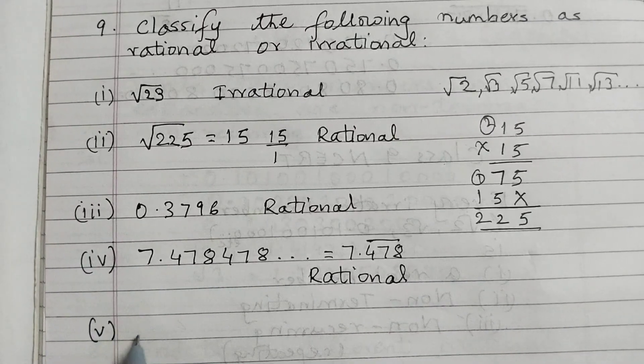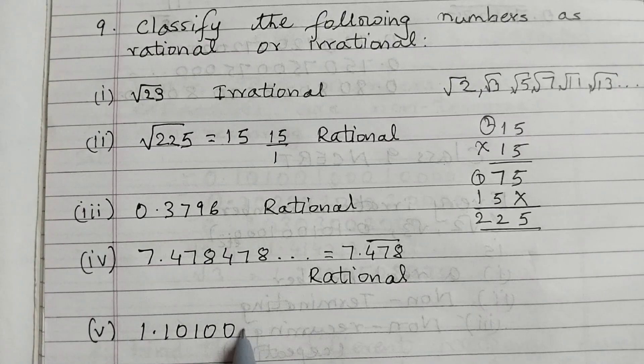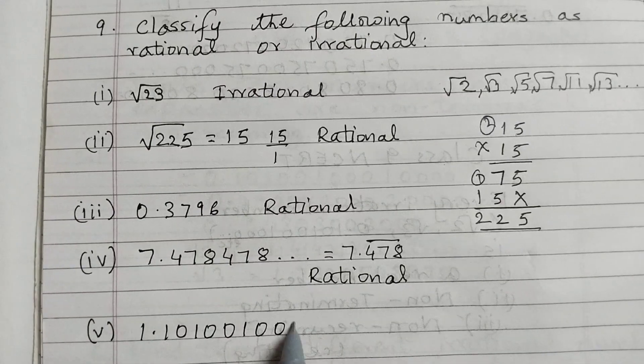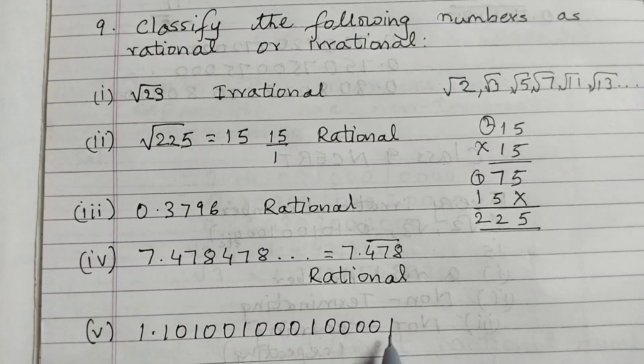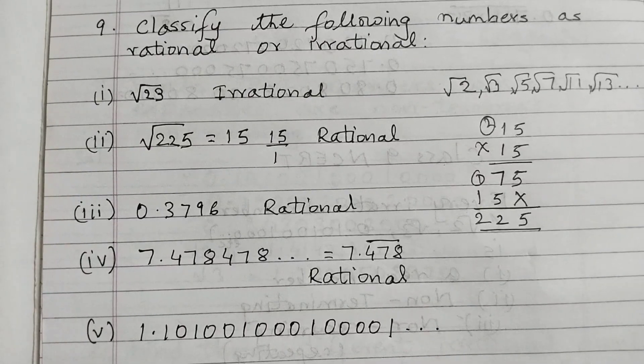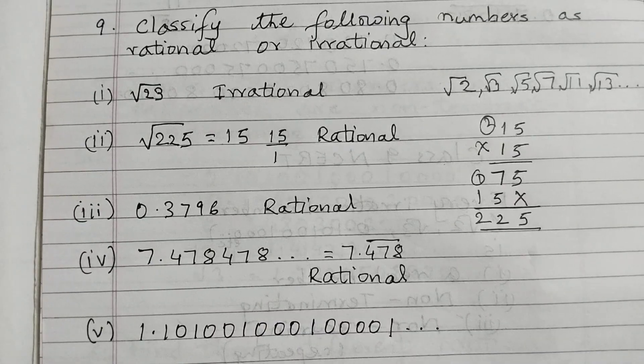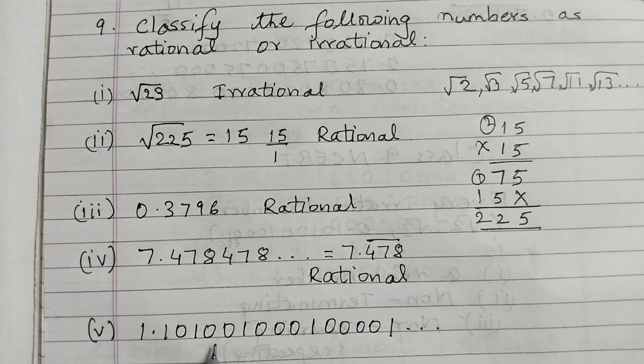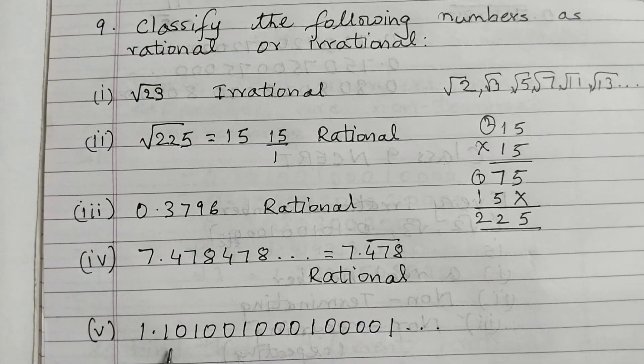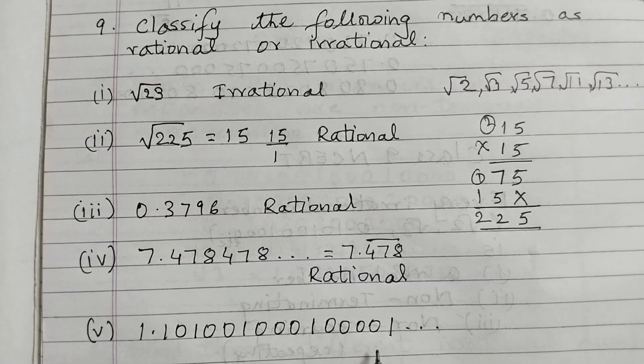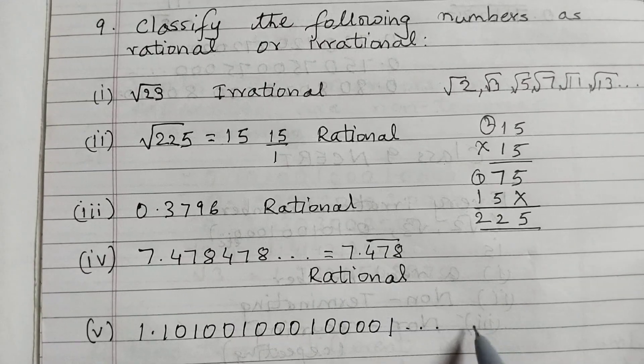And the last one, 1.10100, then 1, 0, 0, 3 zeros, then 1, 0, 0, 0, 0, 1, dot dot dot. These three dots mean it's a non-terminating decimal expansion. However, here we see 1, 0, 10, 100, 1000 and it goes on like this. That means the same block is not repeating. So this is a non-terminating, non-recurring decimal expansion, which is an irrational number.